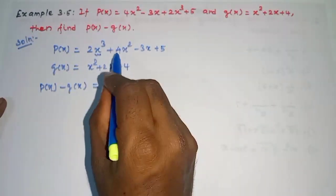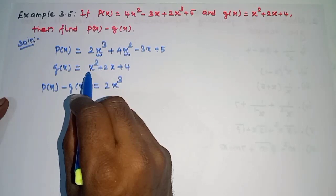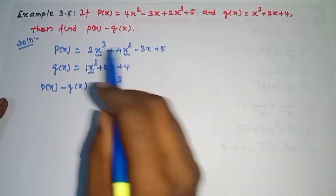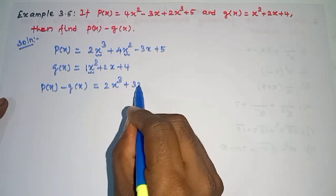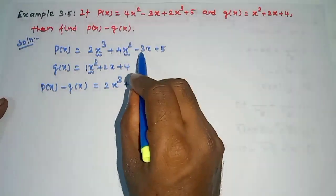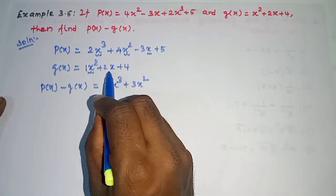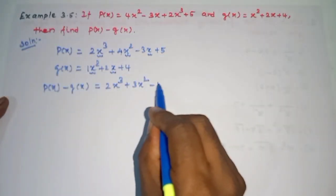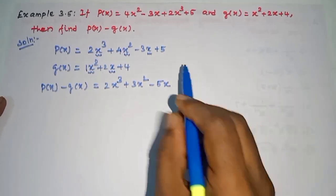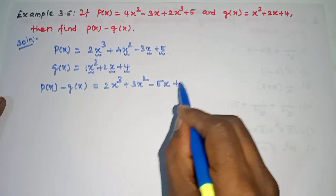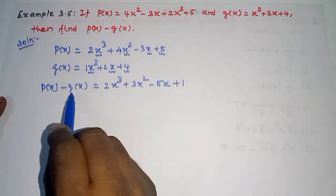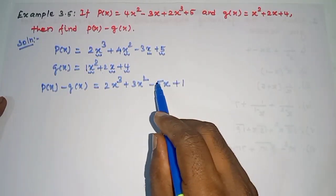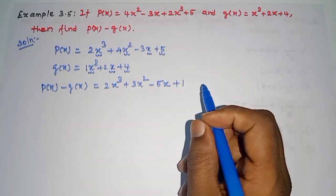We get 3x square. Next, for the x term: minus 3 minus 2, we get minus 5x. 5 minus 4, we get plus 1. Therefore, P of x minus Q of x is equal to 2x cube plus 3x square minus 5x plus 1. Okay, thank you.